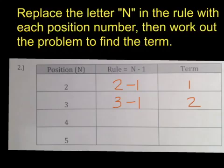Next position number is 4. You guessed it. 4 minus 1 is 3. And the last one that we need to find out, 5 minus 1, super hard, is 4.